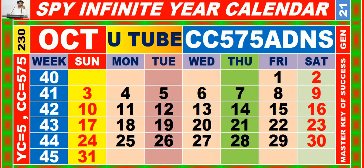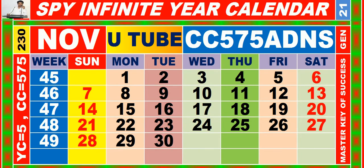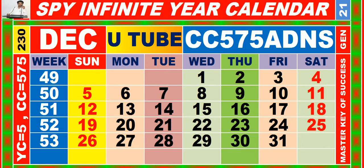Calendar for the month of October having calendar code equal to 5-7-5. Calendar for the month of November having calendar code equal to 5-7-5. Calendar for the month of December having calendar code equal to 5-7-5.